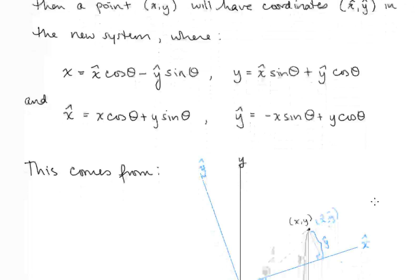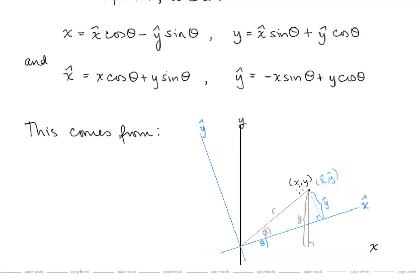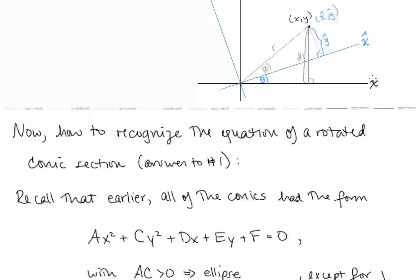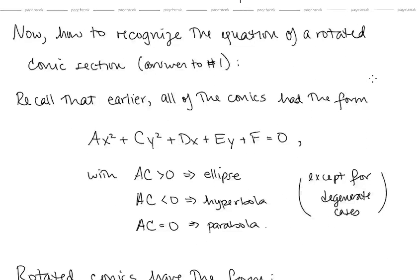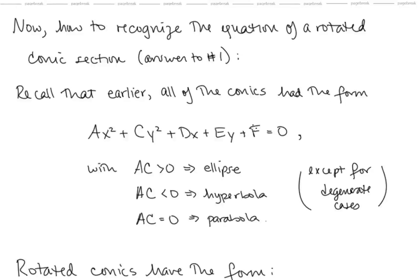I'm not going to go through the derivation of these equations, but it comes from having a point in the plane that we could call x-y or x-hat y-hat, where x-hat and y-hat are the rotated axes rotated through an angle of theta. By using another angle phi and r with the x-y, x-hat, and y-hat distances, we can solve for these equations. Remember that in Lesson 27, all of the conics had the form ax² + cy² + dx + ey + f = 0, and the product ac being positive gave an ellipse, negative gave a hyperbola, and equal to zero gave a parabola.